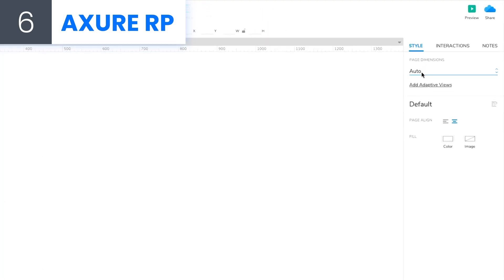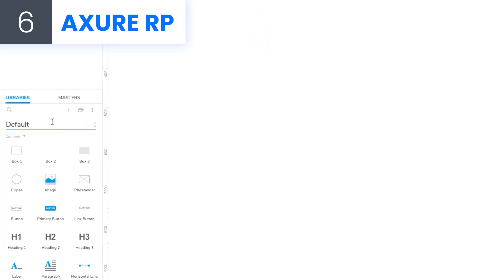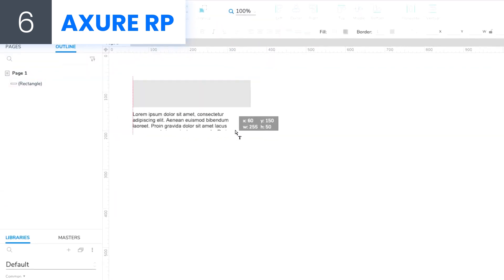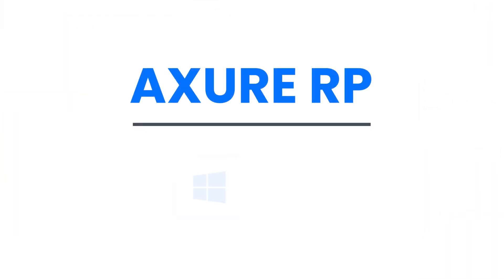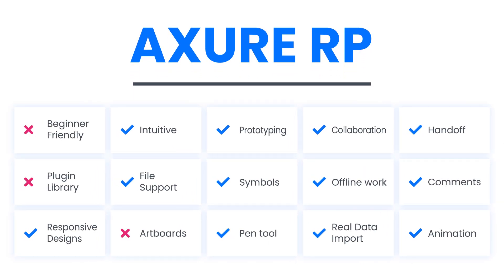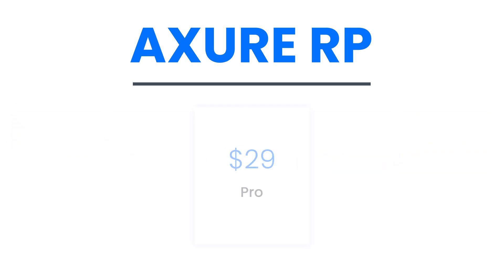At number 6: Axure. For team working and large, complicated projects, Axure RP is a great prototyping tool with plenty of options allowing you unlimited control. It works on Windows and Mac. It's one of the best for responsive designs and has tremendous file support and options galore. Where it is weaker is the fact that it has no plugins library and you can't open multiple artboards at once. The price is $29 per month for the Pro.